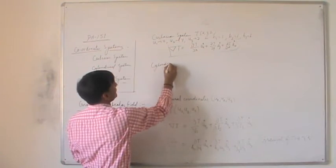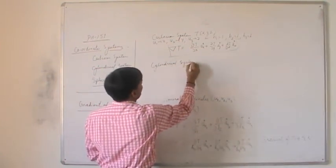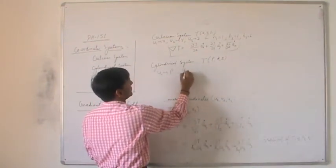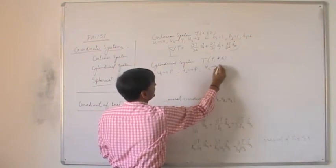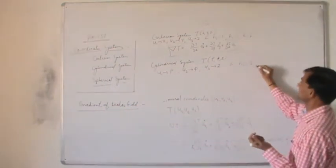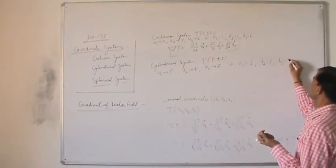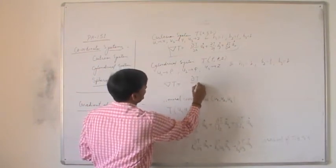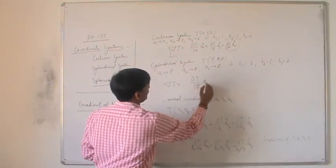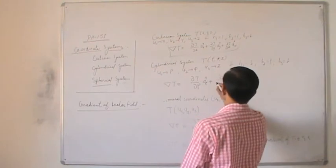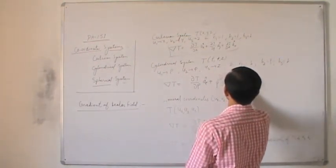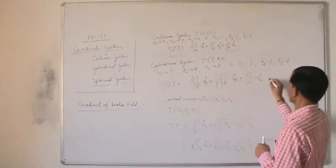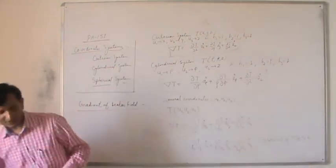In the cylindrical system, T is a function of rho, phi, z. Here u1=rho, u2=phi, u3=z, and h1=1, h2=rho, h3=1. So the gradient of T equals del T/del rho a_rho plus (1/rho) del T/del phi a_phi plus del T/del z a_z.